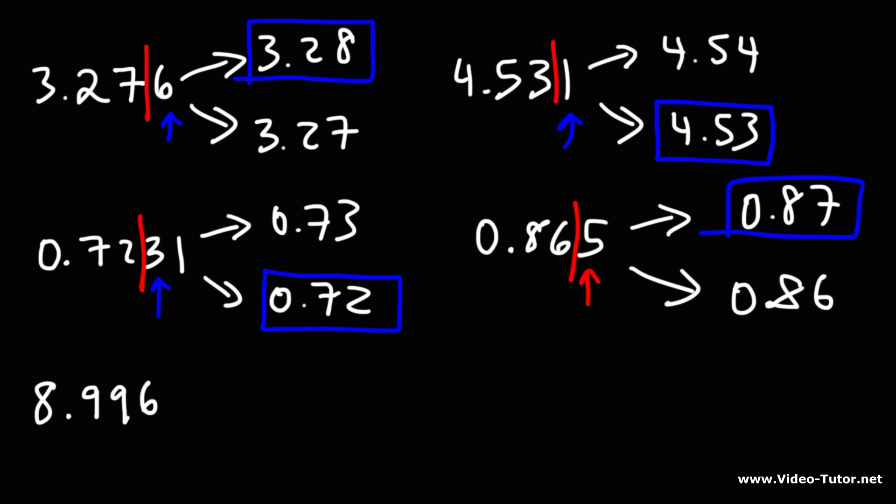Now, what about 8.996? What are the two possibilities here? Well, let's put a line after the hundredths digit. So we need to focus on this 9. Either we keep it the same when we round it down or we round it up. So if we were to round it down, it would be 8.99. If we were to round it up, what would it be? In this case, the next highest number will be 9.00. So looking at the next digit, 6 is greater than 5, which means we need to round up. So the answer is going to be 9.00.